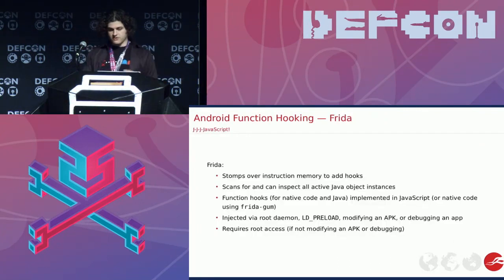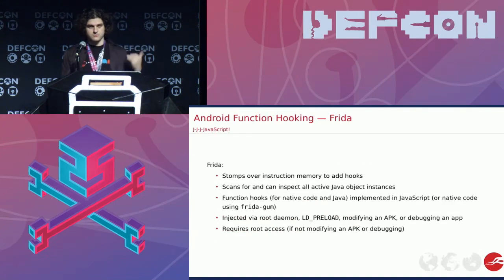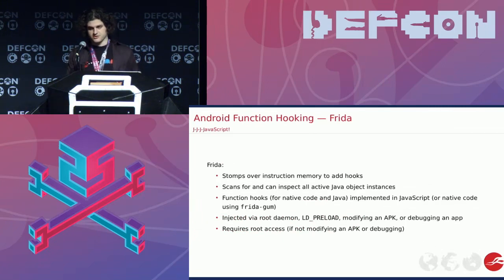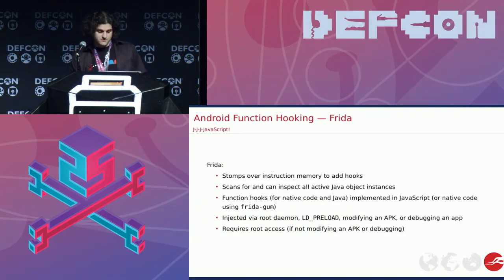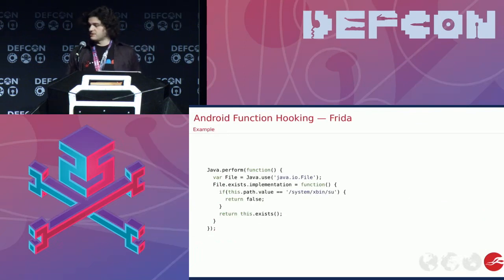Moving on, we have Frida, which is sort of the new hotness for a while. It works on Android. It actually stomps over the actual instructions in memory to jump to its own hooks. It also recently has the capability to inspect and list all the active Java objects so you can tap one specific object. The function hooks are generally speaking implemented in JavaScript, which is not something I like, but it works for many people. And if you don't want to do that you can use the native C/GLib code Frida-gum to do hooking with anything that compiles down to native code. There are many ways to get it working, but the hooks are fairly simple.